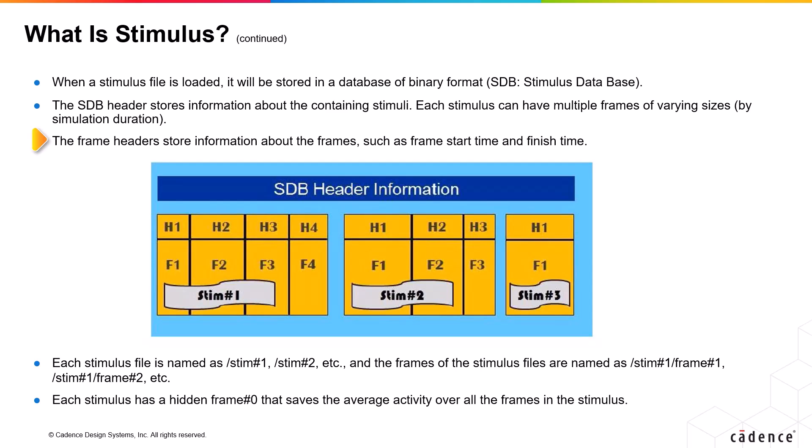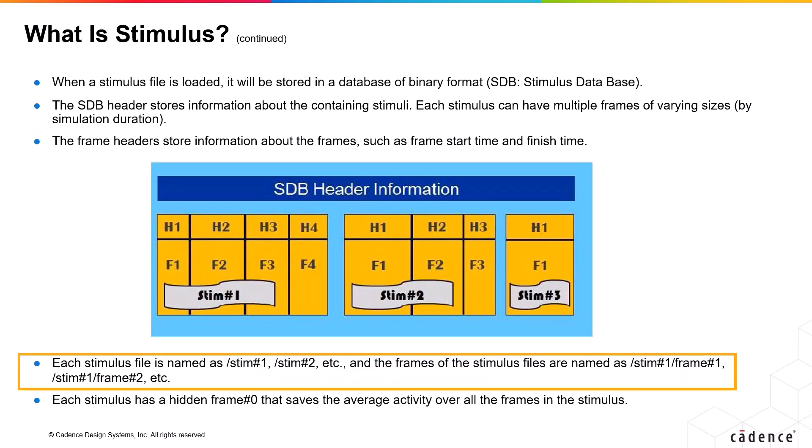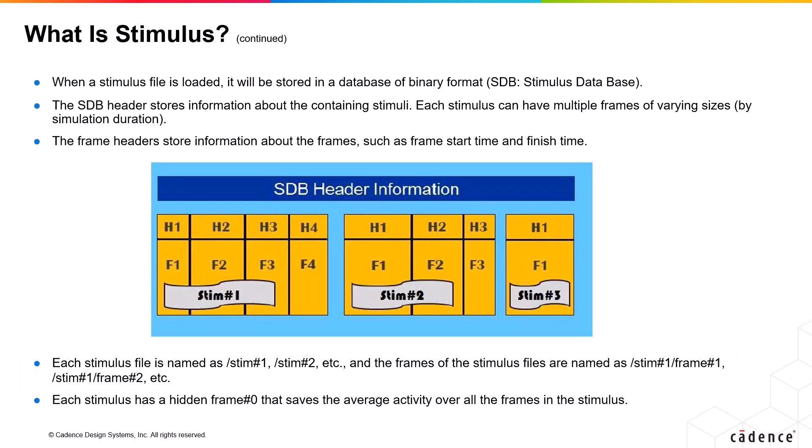Within these frames in a stimulus are frame headers containing information about the frames, like start time and finish time. You can name each of the stimulus files as stim number 1, stim number 2, etc. The corresponding stimulus frame names follow the pattern: stim number 1 frame 1, stim number 1 frame 2, stim number 2 frame 1, etc. This is the nomenclature for the different frames present in the stimulus. An important point is that each stimulus has a hidden frame zero that saves the average activity over all the frames in that stimulus.